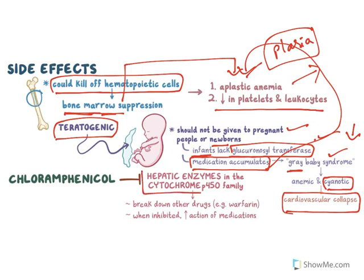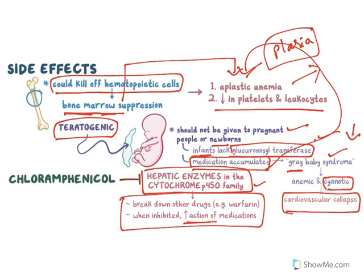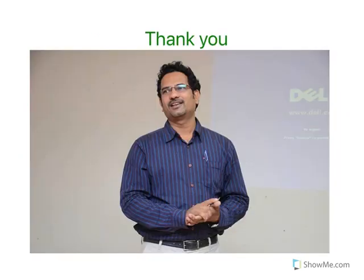Chloramphenicol can also inhibit hepatic cytochrome P450 enzymes. When these enzymes are inhibited, drugs are not metabolized and drug accumulation increases. Because of all these severe side effects, chloramphenicol is used only in specific severe cases. This concludes the topic of chloramphenicol medicinal chemistry aspects.